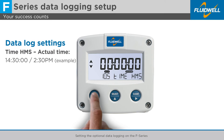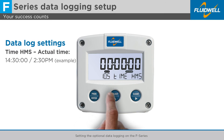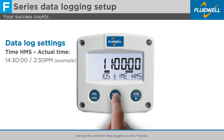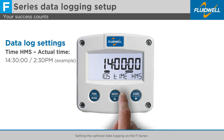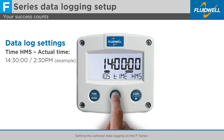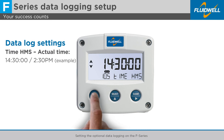Press Prog to change the time setting. Use Select and Clear to set your actual time. For this example, 14:30:00. Press Prog to store this setting.